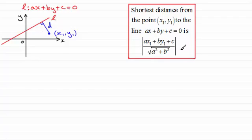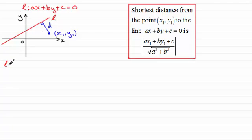Now the proof is quite involved — it's going to take two screens — so do make sure that you take this video right to the end to see the final working. First of all, let's take the line L and rearrange it to put it in the form y equals mx plus c. If I do that, I get y equals minus a over b times x, then minus c over b.